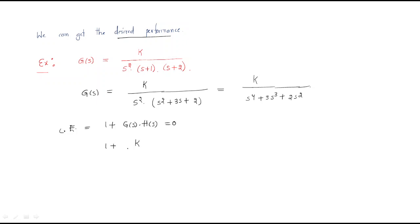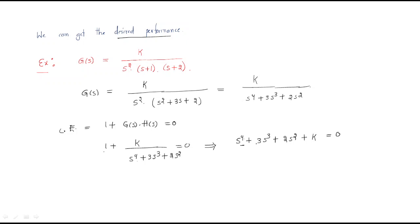The characteristic equation is s⁴ + 3s³ + 2s² + K = 0. Observe that this has a fourth-power term, a third-power term, a second-power term, and a zero-power term, but the s¹ term is missing. Whenever an s-order term is missing, the system is unstable.